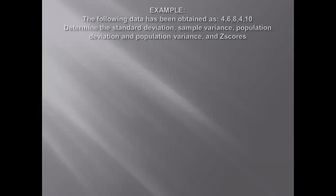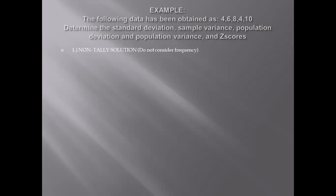We have this example. The following data has been obtained: 4, 6, 8, 4, and 10. Determine the standard deviation, sample variance, population deviation, population variance, and the corresponding z-scores for each individual point. We have two versions. In this video, we're going to consider the non-tally solution, or the non-frequency column tabular solution.